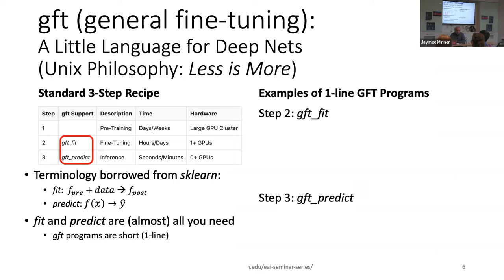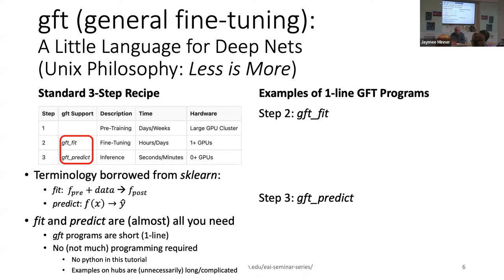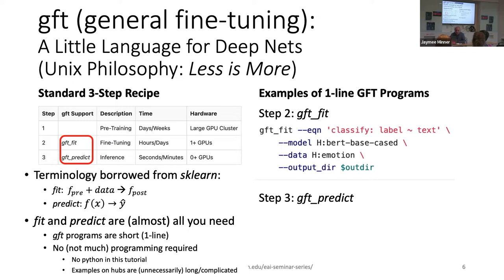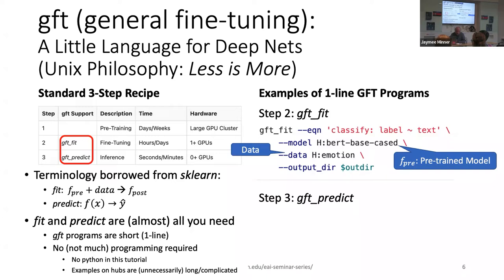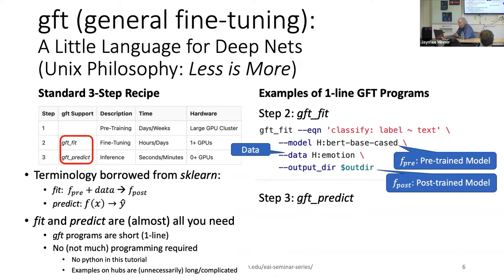These programs are short — typically one line of code, hard to even call it programming. There's no Python, and the examples on the hubs are just too complicated. You shouldn't need hundreds of lines of code to do what really should be basically regression. Here's an example of a fit program — I want it to look a lot like regression in standard statistics packages. The pre-trained model is a BERT model. The data would be a standard dataset called 'emotion' on Hugging Face, and then the output would be put in the output directory.